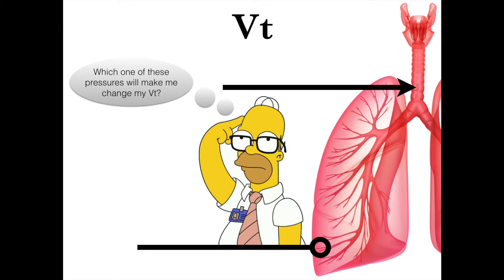We're going to look at two different pressures and the difference between them. The upper pressure is our P-peak pressure, and that's the one that represents the pressure in our large airways. Stuff that can cause that to alarm includes if the patient coughs, if our I-time is set too quickly, or maybe if the sedation is poor and the patient is bucking the vent — that can cause the P-peak to alarm.